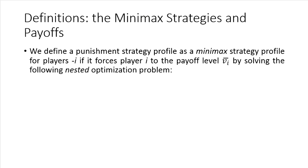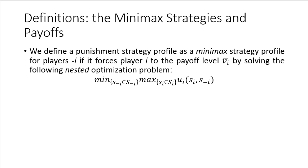Next we'll consider the other concept: a Minimax strategy. The Maximin strategy was thought of as a type of security strategy, whereas a Minimax strategy — which we derive by solving the reverse nested optimization problem — we can think of as a punishment strategy. We're going to find a punishment strategy profile as a Minimax strategy profile for players minus I, if that profile is able to hold player I to the payoff level of the upper bar I. We find this by solving the nested optimization problem and looking at the objective function's value at the optimum.